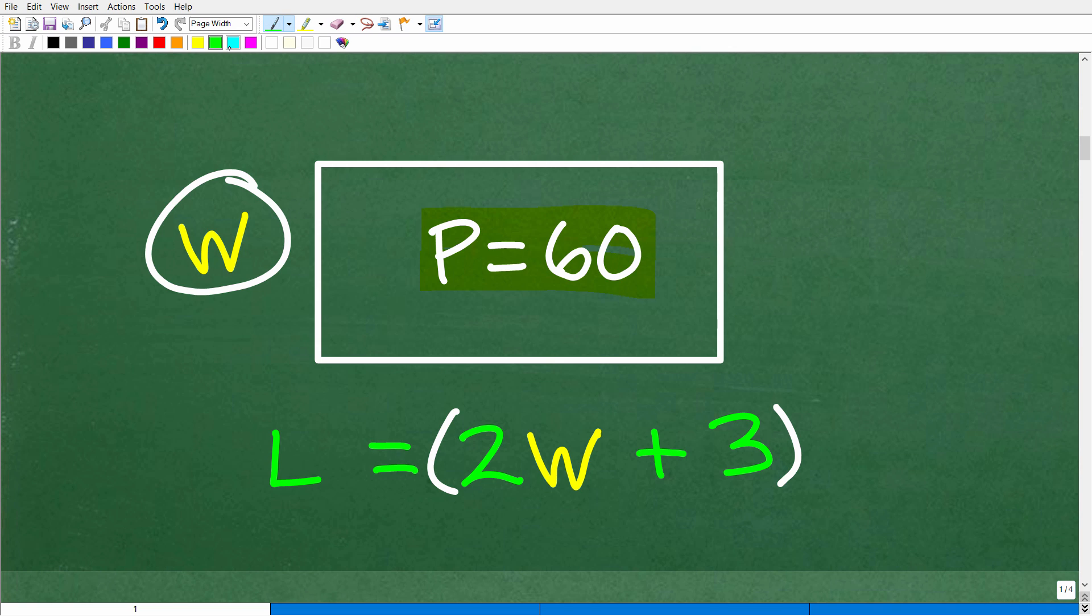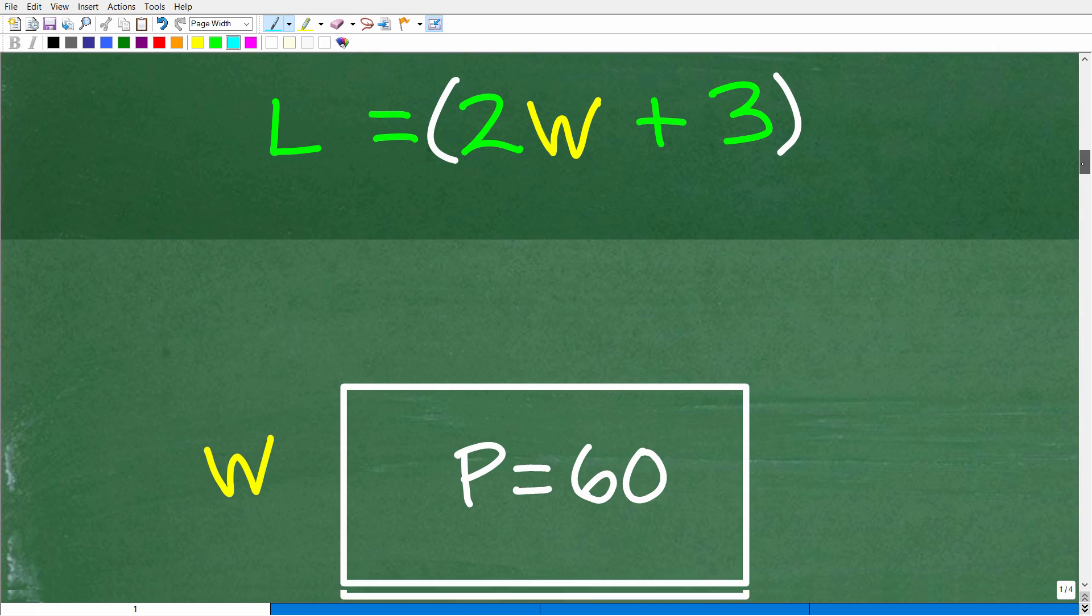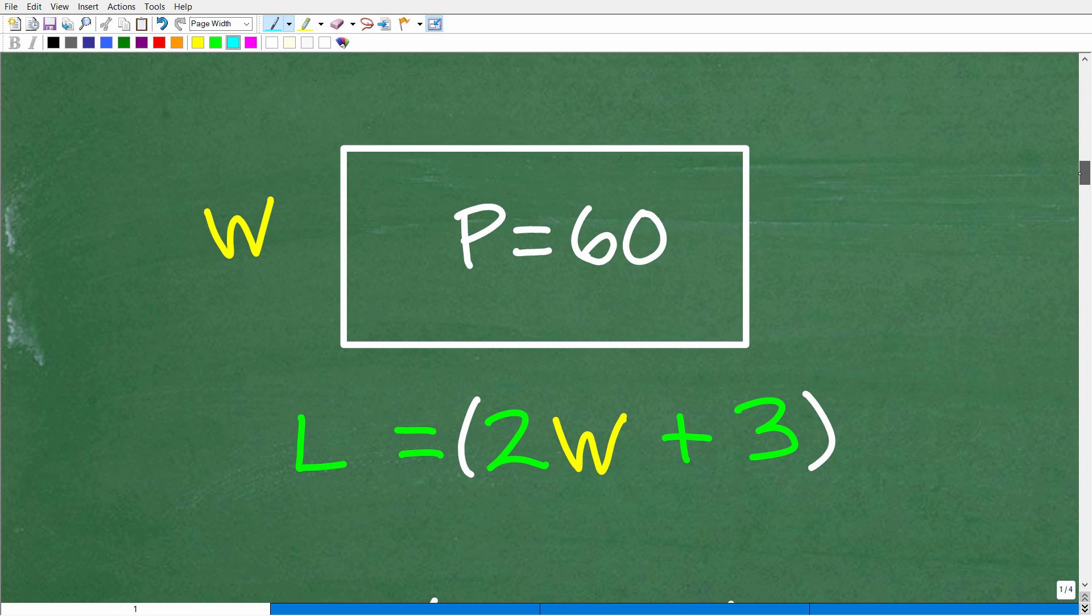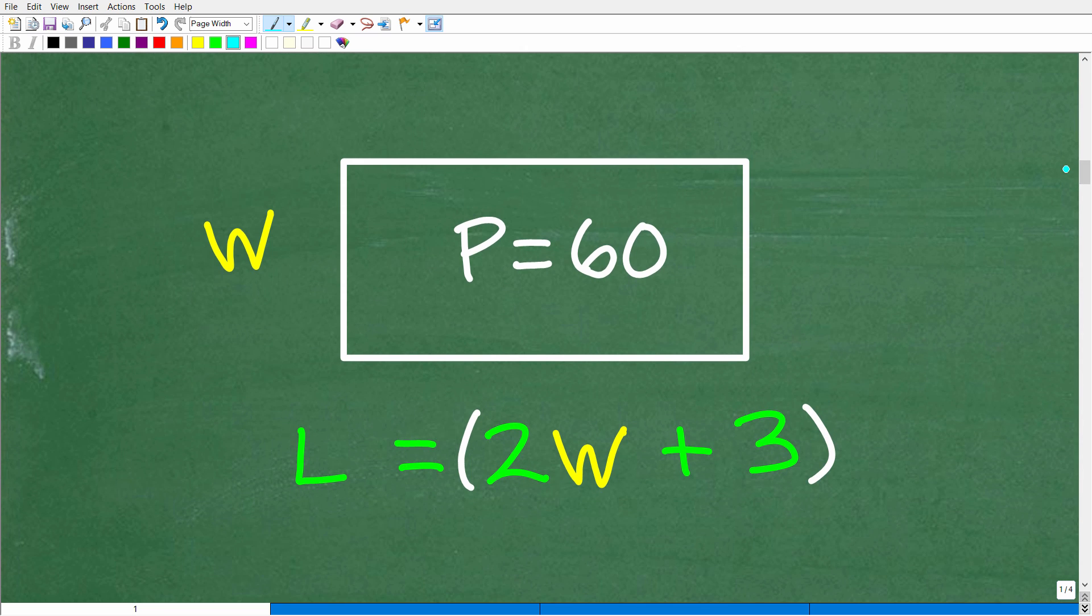Remember that I said a rectangle, the opposite sides are congruent. If this is W inches long, then this side over here is also W inches long, and this length would also be 2W plus 3 inches long. Hopefully you can see where I'm going here. We have an interpretation of the problem. We understand what the perimeter is.